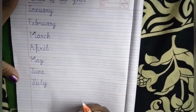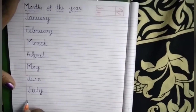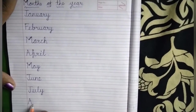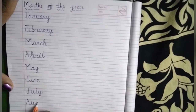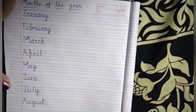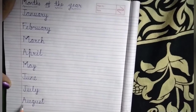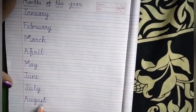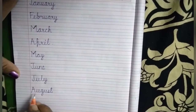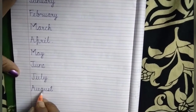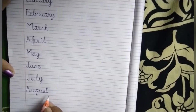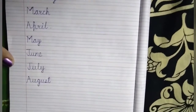Our next month of the year is August. And the spelling of August is A-U-G-U-S-T, August. And August is our eighth month of the year.